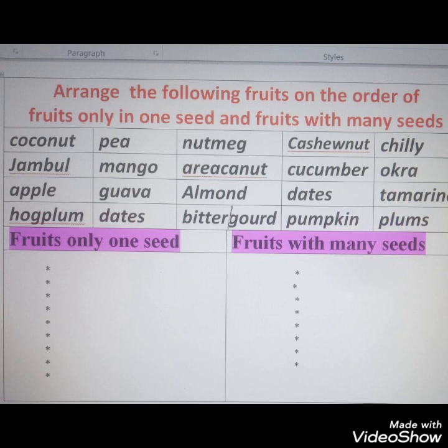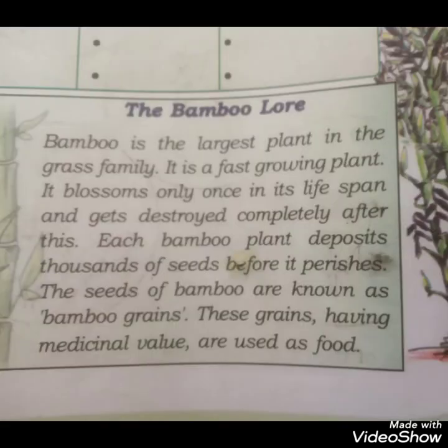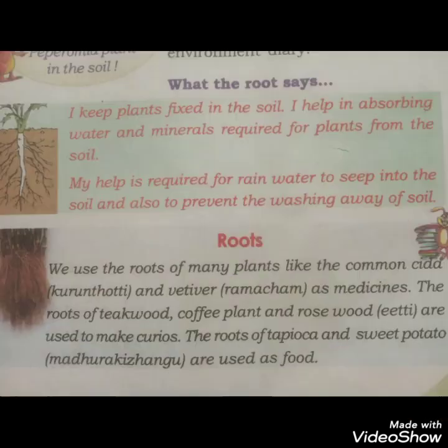Let's read about bamboo. Bamboo is the largest plant in the grass family. It is a fast-growing plant and each bamboo plant deposits thousands of seeds before it perishes. The seeds of bamboo are known as bamboo grains. These grains have medicinal value and bamboo grains are also used as food. Write about bamboo in your notebook.